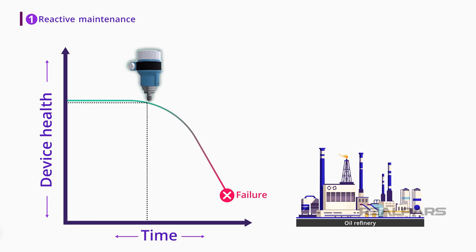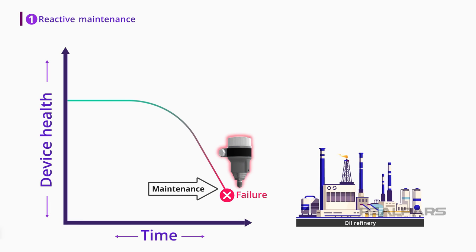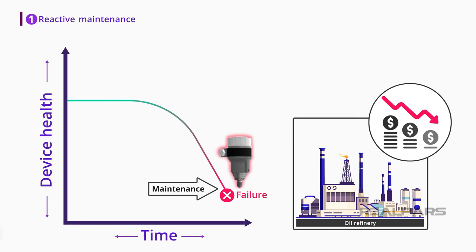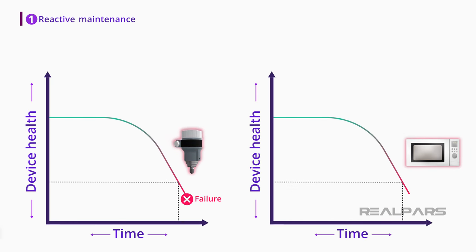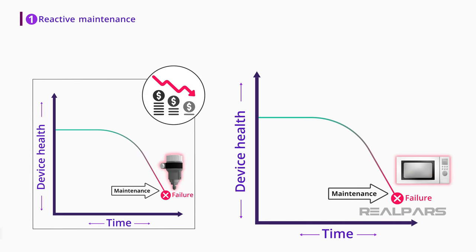For example, if you wait for a pressure transmitter to fail and then perform maintenance on it, there might be considerable financial losses. This is because every minute of interruptions in the manufacturing process may cost hundreds of thousands of dollars, if not more. So the wait and react or reactive maintenance may work fine for your microwave oven, but it is probably not the best choice for industrial processes.